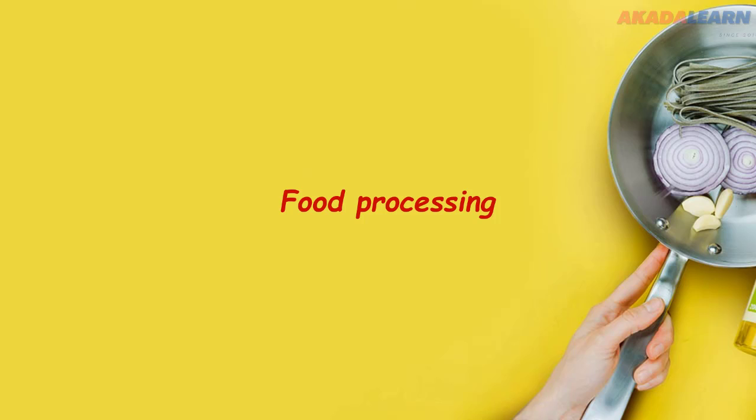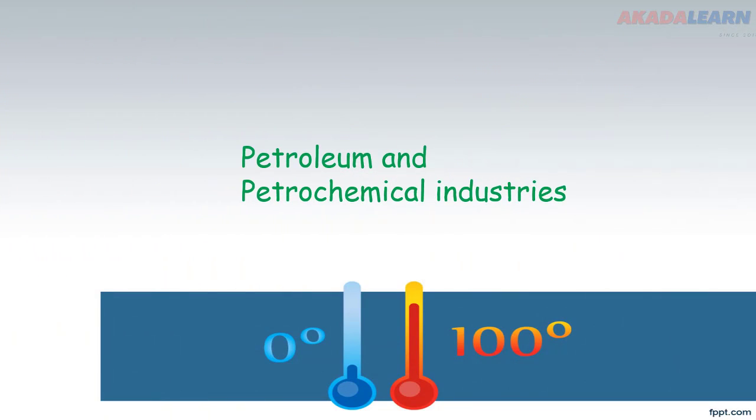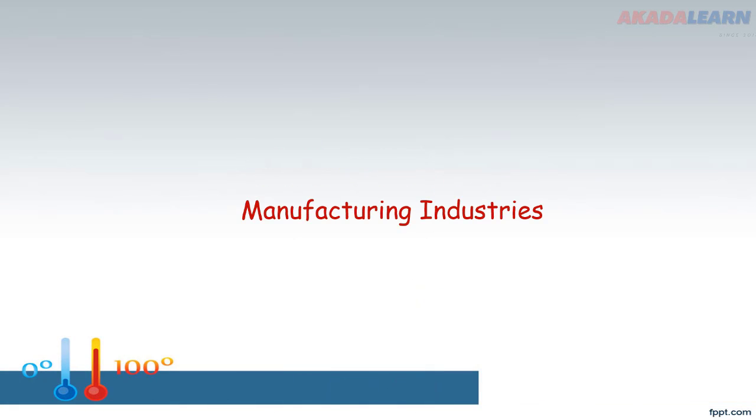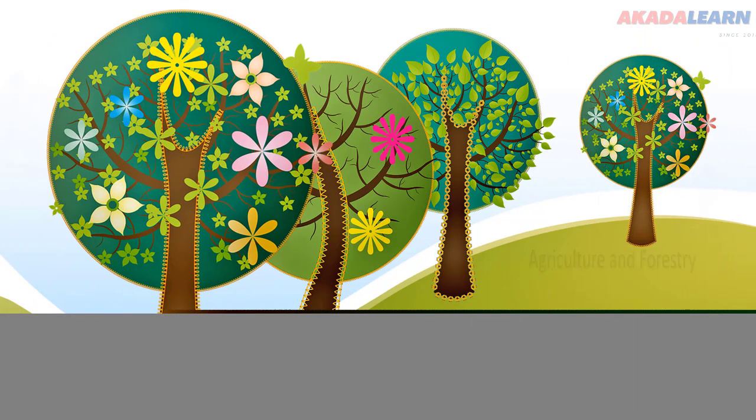You can also work in the food processing sector. Petroleum and petrochemical industries will receive you with open arms if you are well grounded in chemistry. You can also work in the manufacturing industry. Agriculture and forestry is also another lucrative place where people with knowledge in chemistry can work.